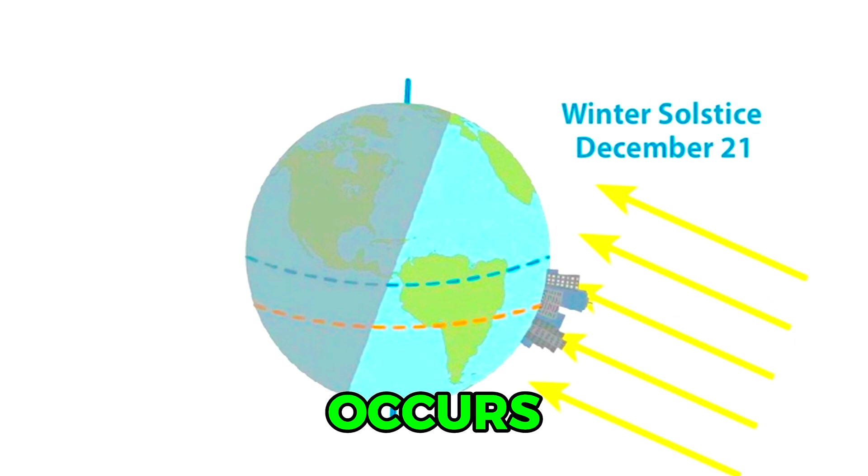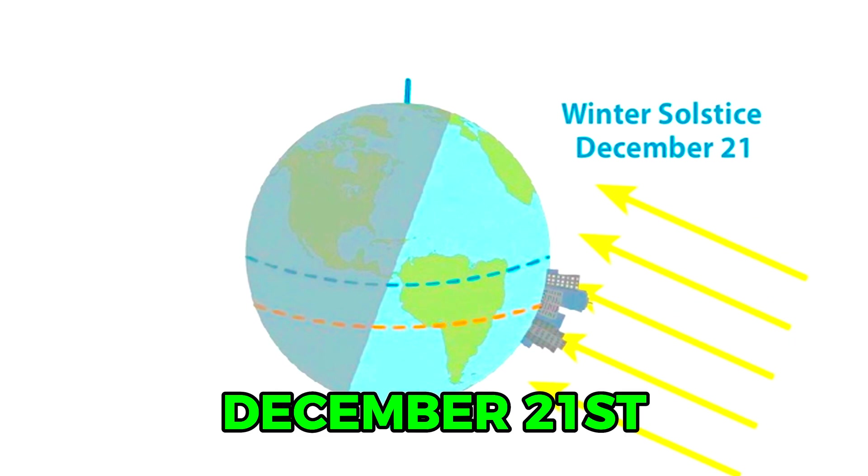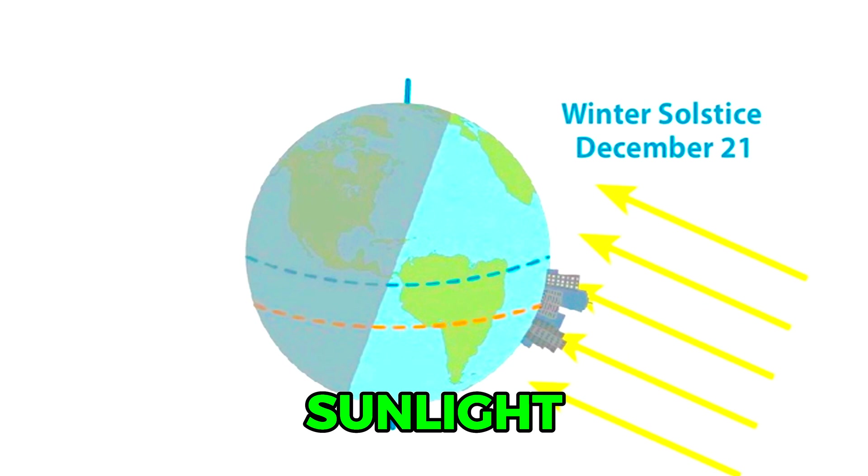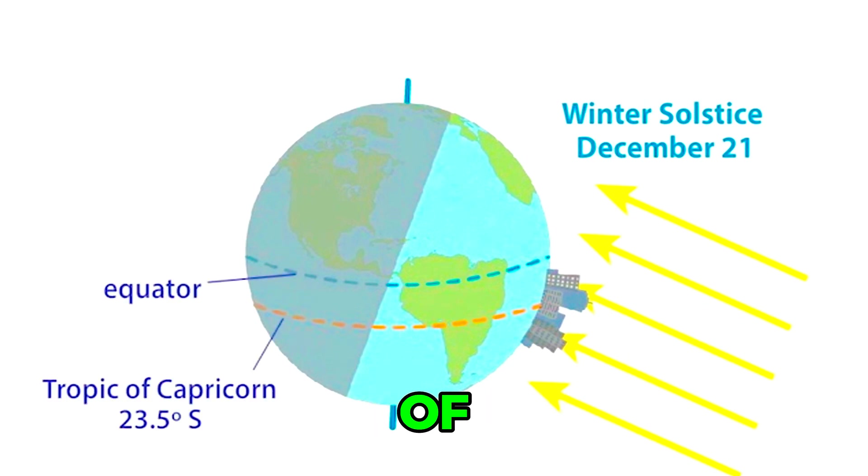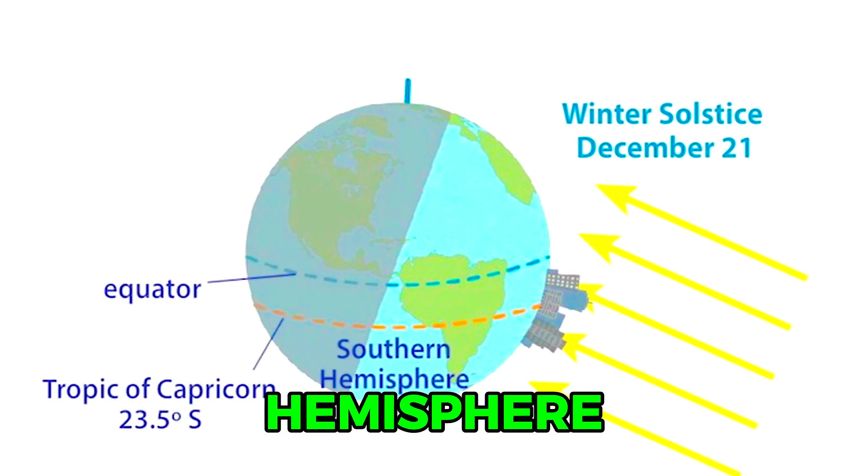Six months later, the winter solstice occurs on December 21st, when the most direct sunlight hits the Tropic of Capricorn in the southern hemisphere.